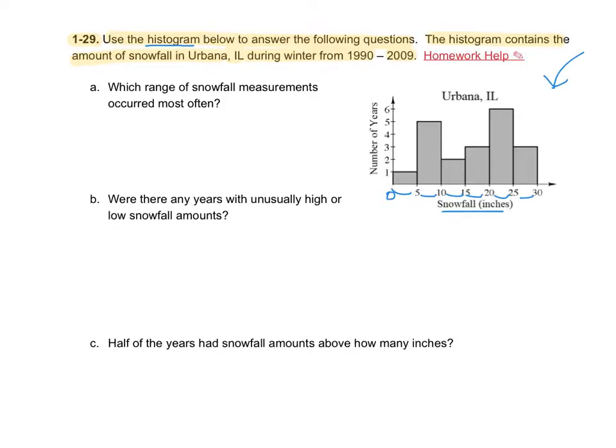This is from 0 to 5, from 5 to 10, 10 to 15, and so on. That's what makes it different from a bar graph.